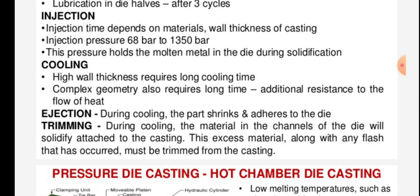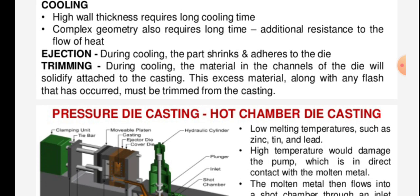The pressure holds the molten metal in the die during solidification. Cooling: high wall thickness requires long cooling time, and complex geometry also requires long time due to additional resistance to the flow of heat. Ejection: during cooling, the part shrinks and adheres to the die. The excess material along with any flash that has occurred must be trimmed from the casting.